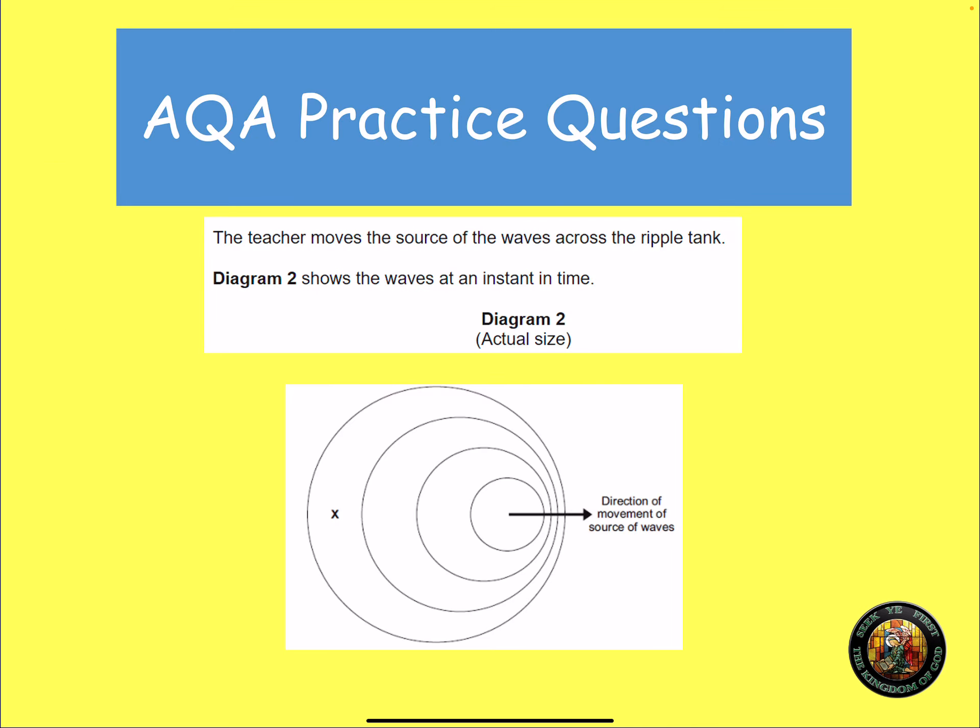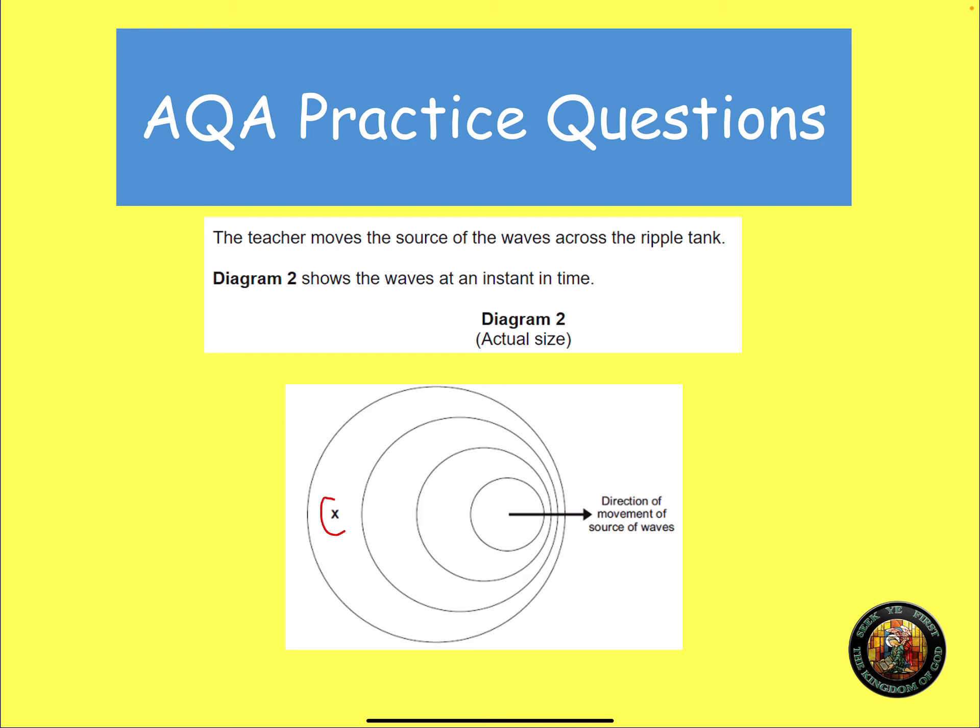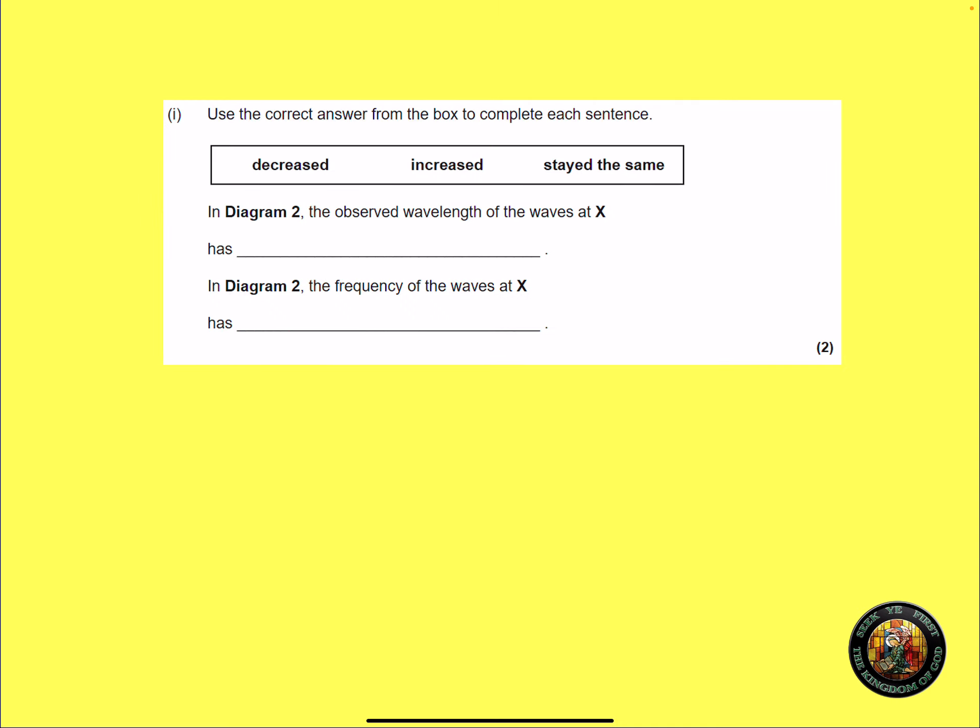Here's some questions for you. The teacher moves the source of the wave across the ripple tank and you can see the ripples in this tank and you can see the direction of the movement of the waves. Clearly see the wavelength difference. So, two marks. In diagram 2, the observed wavelength of the waves at x has something and then, in diagram 2, the frequency of the waves at x. So, you can see there's x. So, what's happened to the wavelength and what's happened to the frequency for two marks? So, the observed wavelength of the wave at x has increased, which means the frequency has decreased.